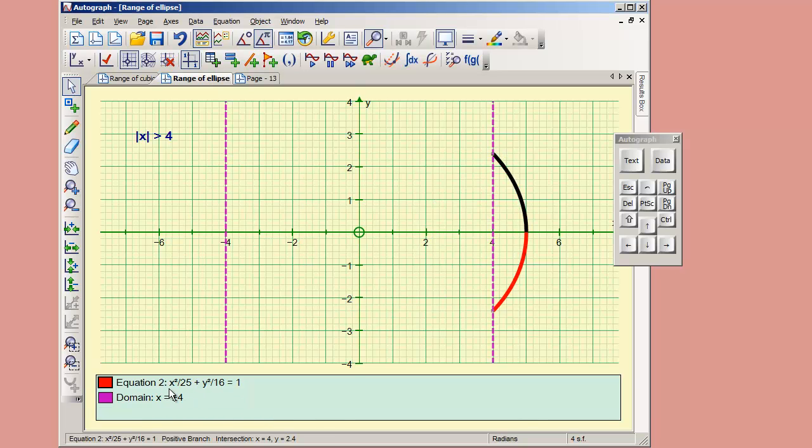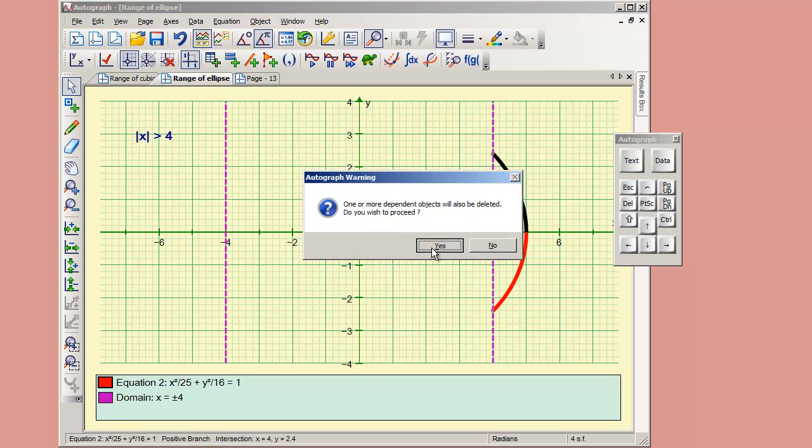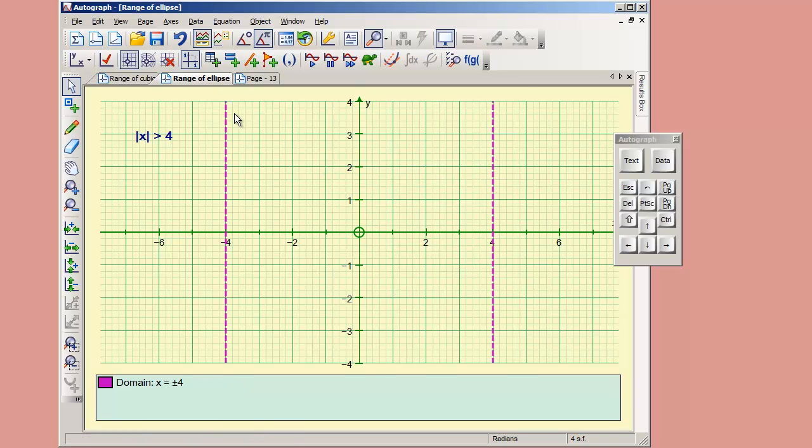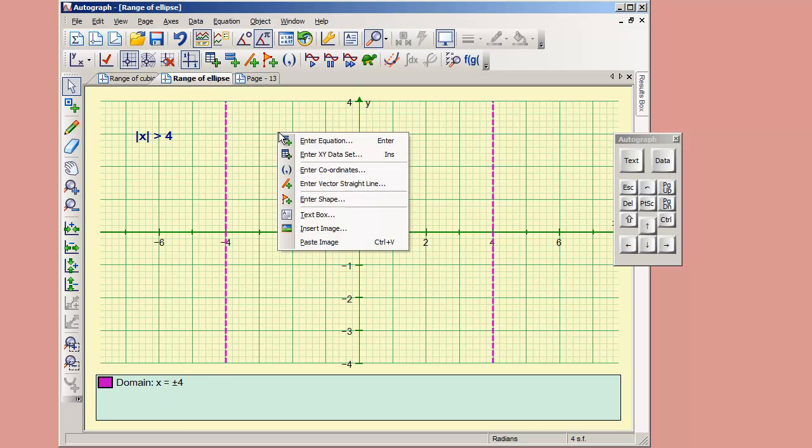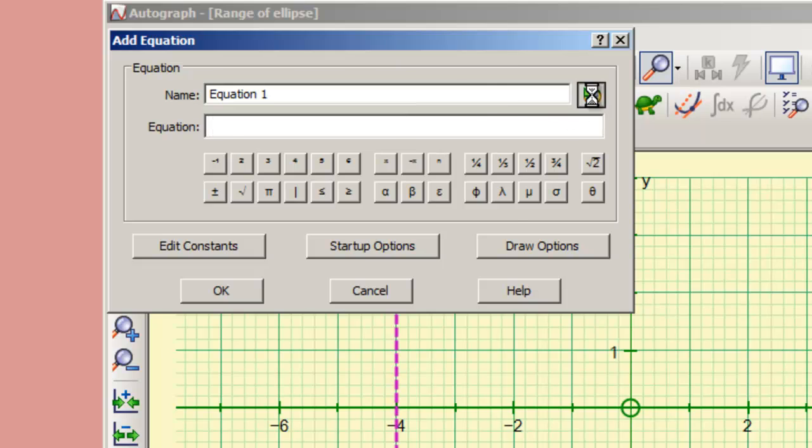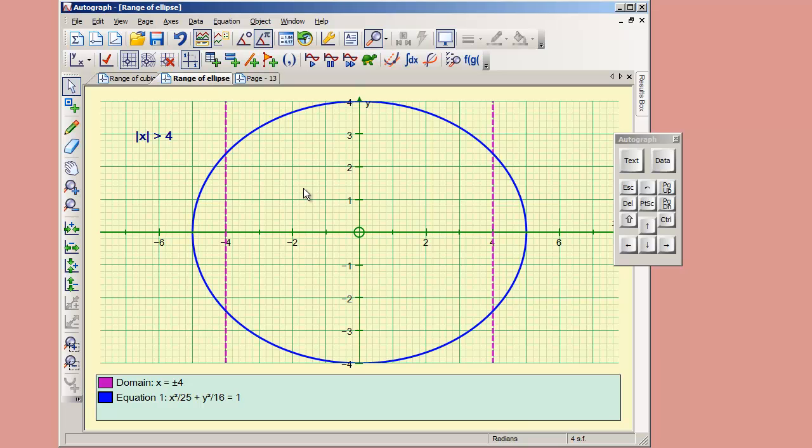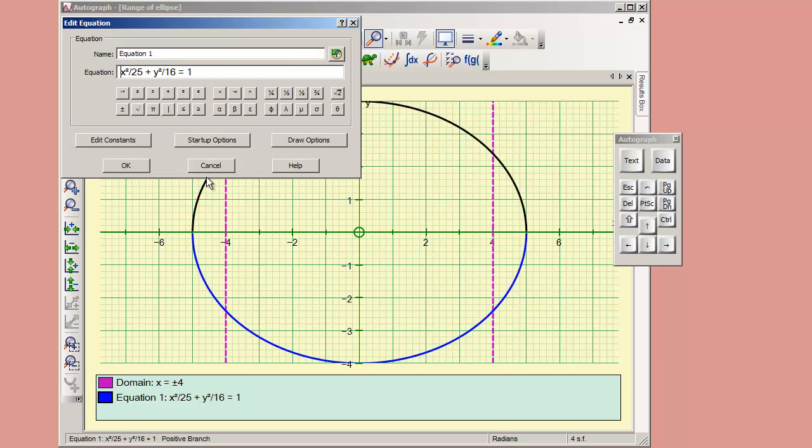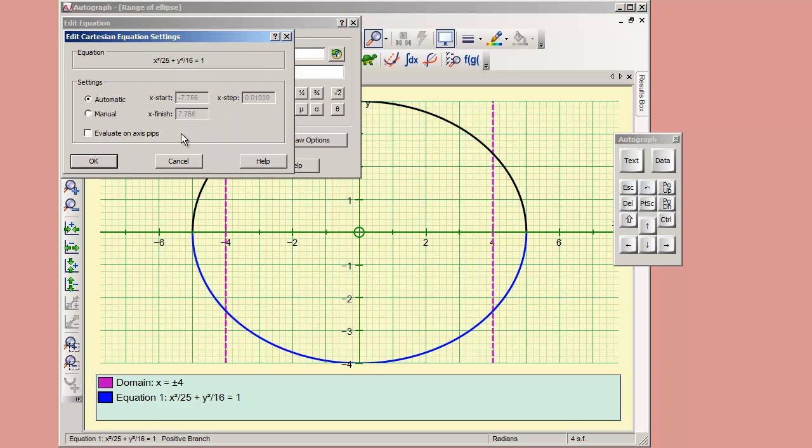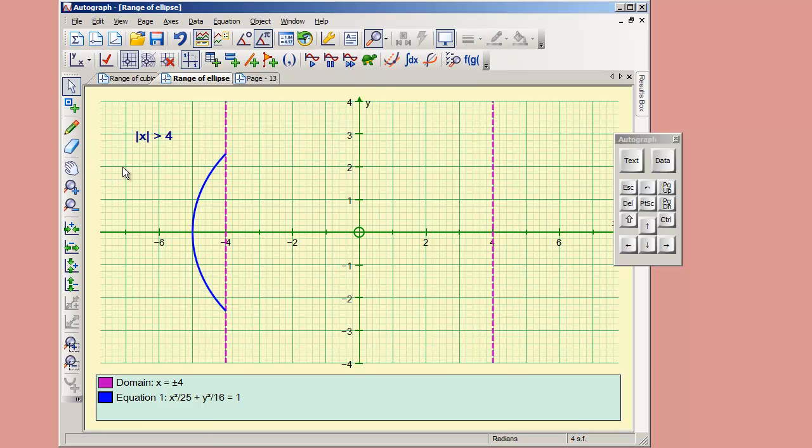You'll notice that because these are all implicit equations of second degree, they rearrange as y equals plus or minus, which is why we've got two halves. We've got our x equals plus or minus 4 representing the domain. Now I'm going to enter an equation and put our ellipse back. We need to double click and look at the startup options and do manual from negative 5 to negative 4.